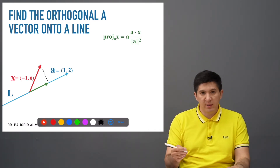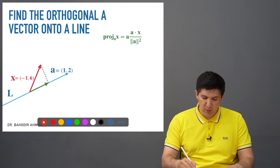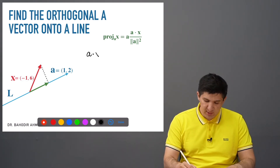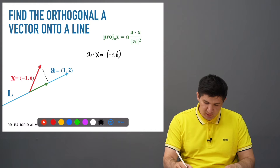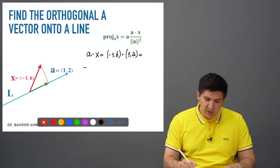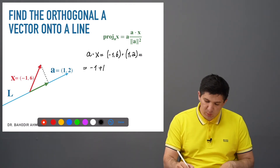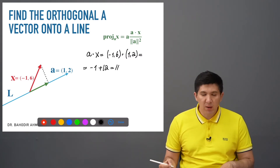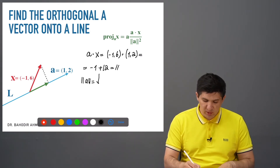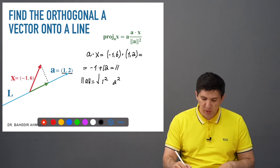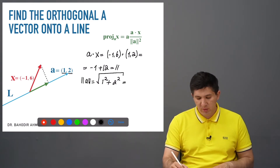In order to do this, we have to multiply a to some constant, which is calculated in the following way. First, I compute the dot product of a and x: I multiply minus 1 and 6 by 1 and 2 component-wise and add the results. That gives minus 1 plus 12, which is 11. Next, we find the norm of a and its square. The norm is found by squaring each component — 1 squared and 2 squared — summing them, and taking the square root. That gives 1 plus 4, which is 5, so the norm of a is the square root of 5.